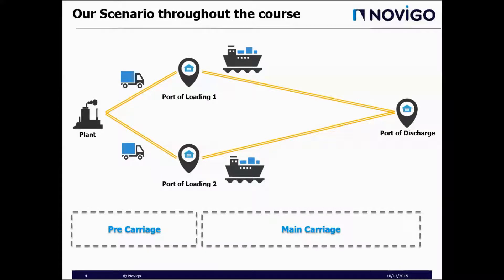This is the scenario which we work on throughout our course. Our company produces and exports chemical products. We build containers on our plant and send them overseas to our customers. In this scenario our goal is to send those containers to the port of discharge. In order to do that we have two options: we can use port of loading 1 or port of loading 2. We choose the port of loading while we are in the planning stage by considering the schedules.